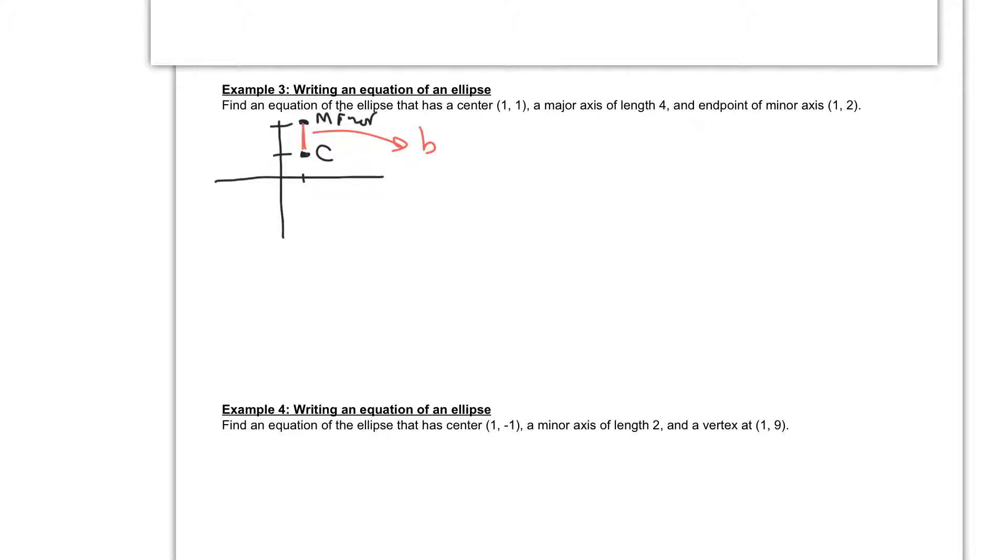If we had, for some reason, the center and an endpoint of the major axis, that would be our A value in between here. So from our center to our minor axis endpoint, that is our length of B.